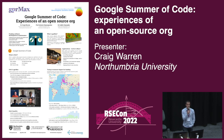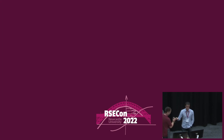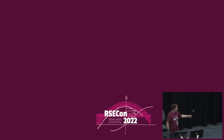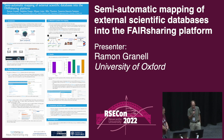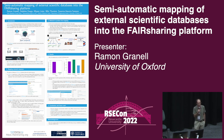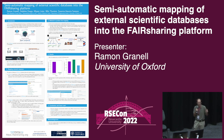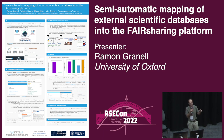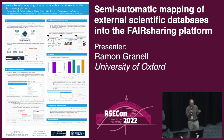My name is from Oxford University and I'm going to talk about FAIRsharing. FAIRsharing is our web platform that contains three key elements of the FAIR ecosystem — Findable, Accessible, Interoperable, and Reusable science. In our platform we contain standards, databases, and policies, and you can find which databases implement a specific standard. As mentioned this morning, following standards in databases is very important.